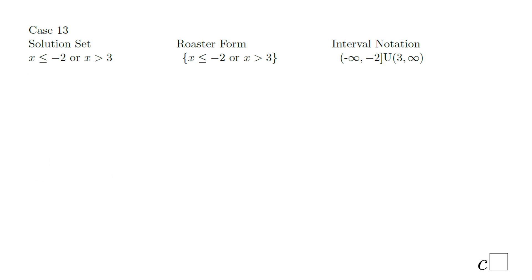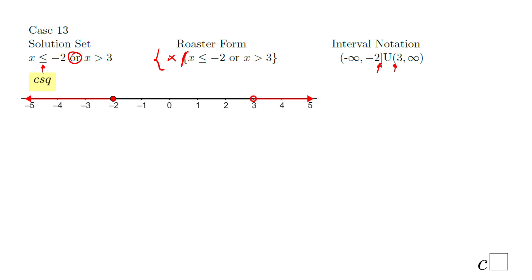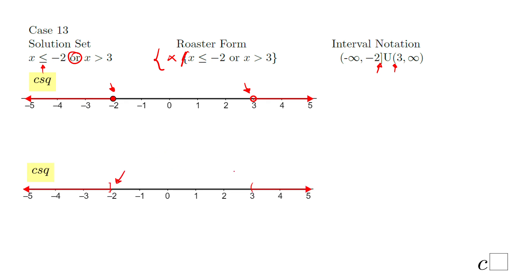We have a combination: x less or equals negative 2 or x greater than 3. In roster form: x when x is less or equals negative 2 or x is greater than 3. The interval notation: bracket at negative 2 because of the equal sign, and parenthesis at 3 because there is no equal sign. Don't forget the union sign. Graphically: full dot at negative 2 (equal), empty dot at 3 (no equal), shaded left from negative 2 and right from 3. The second way uses a bracket and parenthesis.